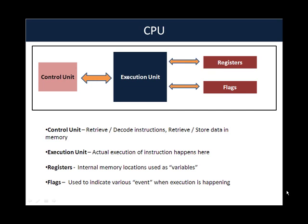The CPU consists of four parts very broadly. The first is the control unit — this is the place in the CPU responsible for retrieving and decoding instructions as well as storing and retrieving data from memory while the CPU is executing instructions. The second block is the execution unit, which is the place where the actual execution happens. When a CPU is executing instructions, it requires some internal memory locations in order to do those calculations. These are called registers.